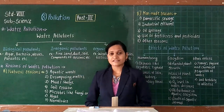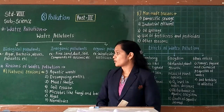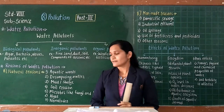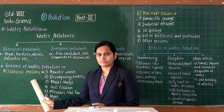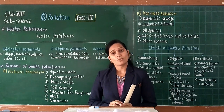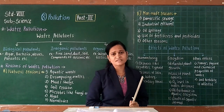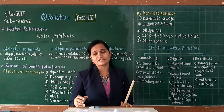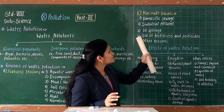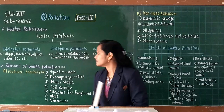Now let us see the next point related to the reasons of water pollution. In reasons of water pollution, there are mainly two categories. The first one is natural reasons — some reasons occur naturally which are responsible for causing water pollution. And the second one is man-made reasons — activities done by human beings which are responsible for causing water pollution.